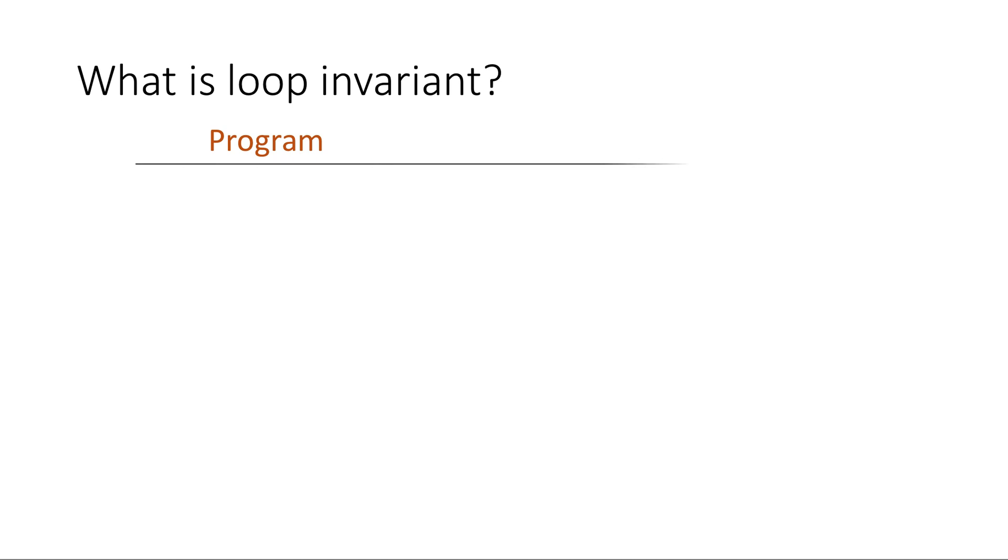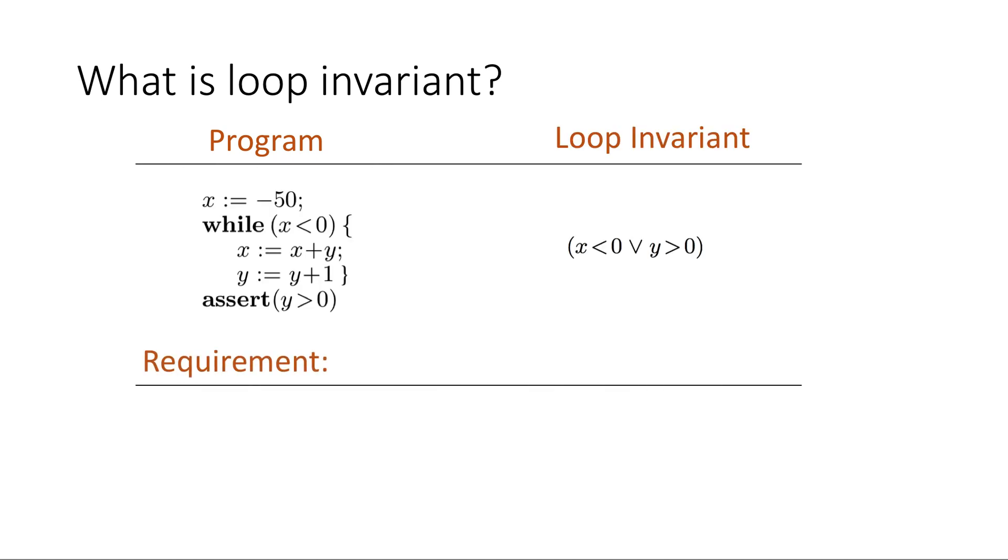A loop invariant is a logical rule that tells properties about the variables. This rule should satisfy three conditions, namely pre, invariant, and post conditions.